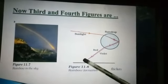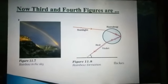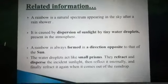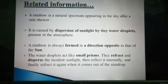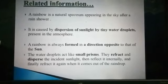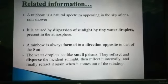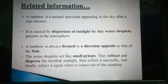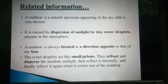A rainbow is a natural spectrum appearing in the sky after a rain shower. It is caused by dispersion — splitting of sunlight by tiny water droplets into different colors. A rainbow is always formed in a direction opposite to that of the sun. The water droplet acts like a small prism.